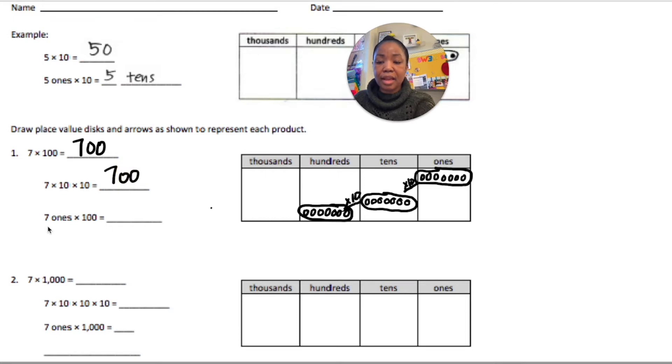Or we could say that we did 7 ones times 100, which is 7 hundreds. Notice here, this is the unit form. Notice here, this is the standard form. I'm sorry. And this here is the unit form.